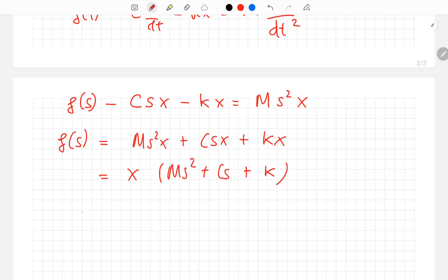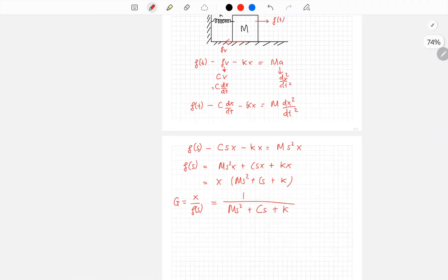By definition, the transfer function is output over input, so X over F of S. This will give you 1 over M times S square plus C times S plus K. This is the transfer function for this mechanical system.